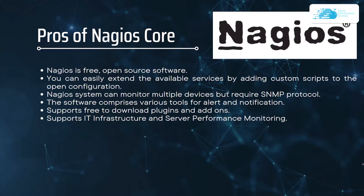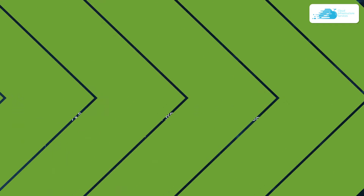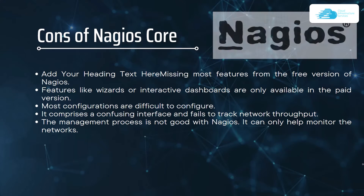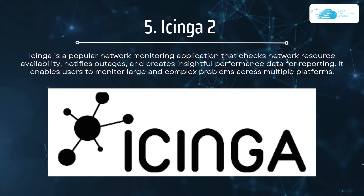Nagios can monitor multiple devices but requires SNMP protocol. The software comprises various tools for alerts and notifications and supports IT infrastructure and server performance monitoring. The cons of Nagios are that features like wizards and interactive dashboards are only available in the paid version, most configurations are difficult to configure, it has a confusing interface, and it fails to track network throughput.